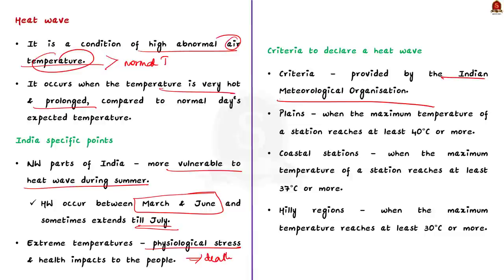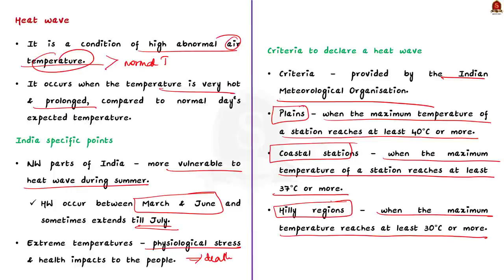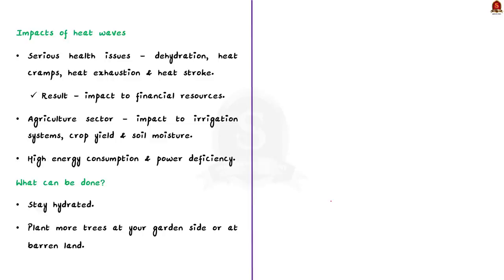According to the Indian Meteorological Organization, a heat wave is declared based on three criteria: first, when the maximum temperature of a station reaches at least 40 degrees Celsius or more for plains; second, when the maximum temperature reaches at least 37 degrees Celsius or more for coastal regions; and third, when the maximum temperature reaches at least 30 degrees Celsius or more for hilly regions. Based on these three criteria, a heat wave is declared in different landscapes.